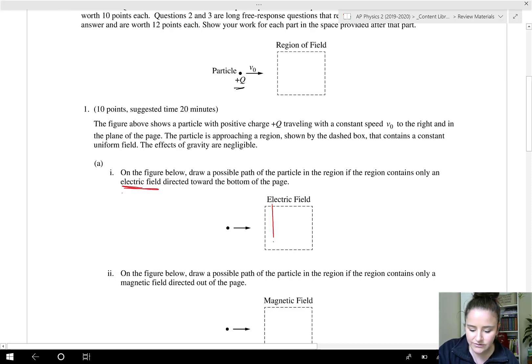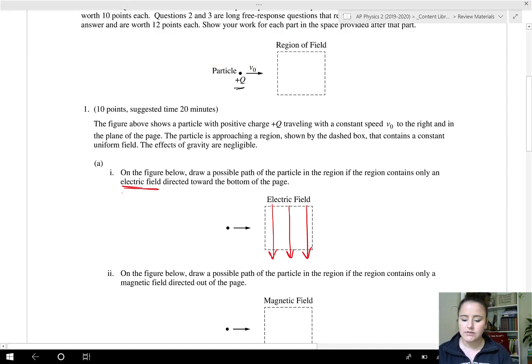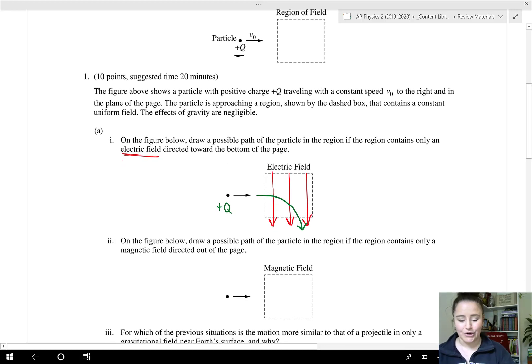If that is directed toward the bottom of the page signified by these arrows, what path will the electron take? I can go ahead and do that in green. If this charge is a positive charge, positive charges flow with the electric field lines. So it'll enter the field and be pushed downward due to that electric force. It doesn't say to explain, so we're good to go.